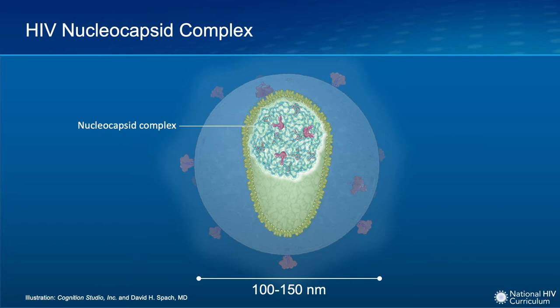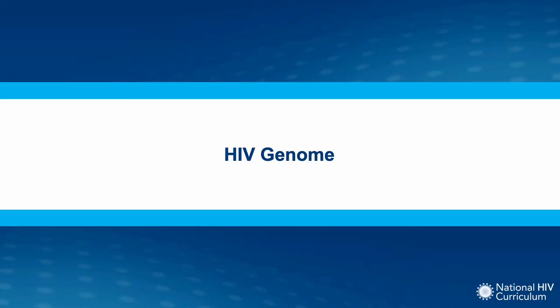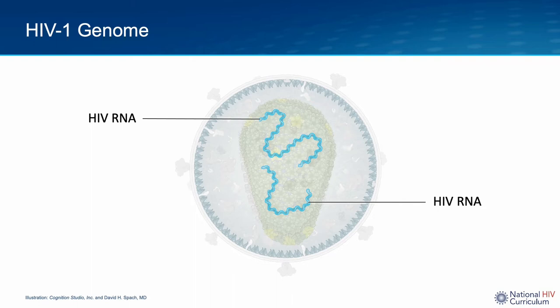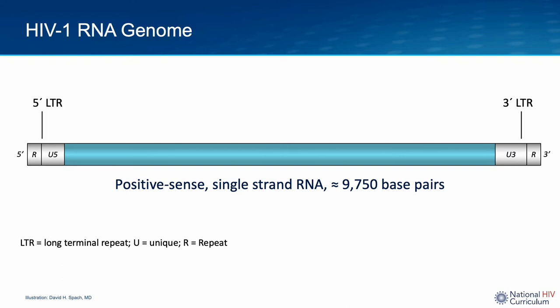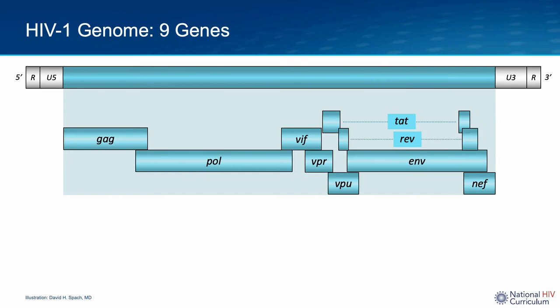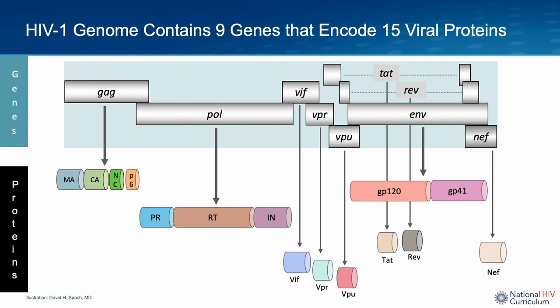The innermost structural component of HIV is the nucleocapsid complex, a tightly woven mix of HIV-RNA and several other proteins. Each virion contains two identical copies of single-stranded genomic HIV-1 RNA. The genomic HIV-1 RNA is a positive-sense strand that is approximately 10,000 base pairs in length. The entire HIV-1 genome contains only nine genes, and these nine genes encode for the downstream production of a total of 15 proteins.